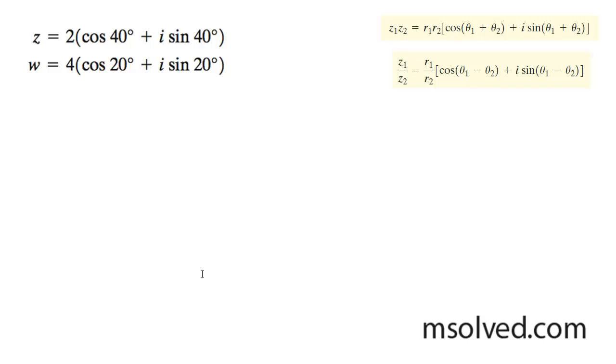We want to find the multiplications of these two polar forms and the division of them. And what we do first is to find ZW.